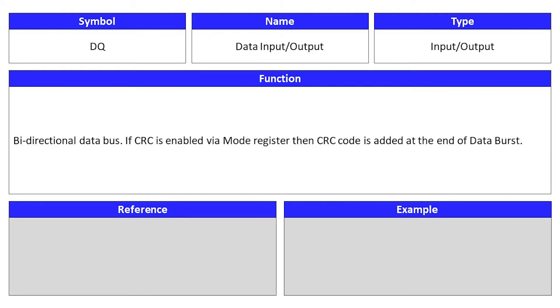Data input and output is an input and output signal. Its symbol is DQ. This is a bi-directional data bus. If CRC is enabled via Mode Register, then CRC code is added at the end of a data burst.